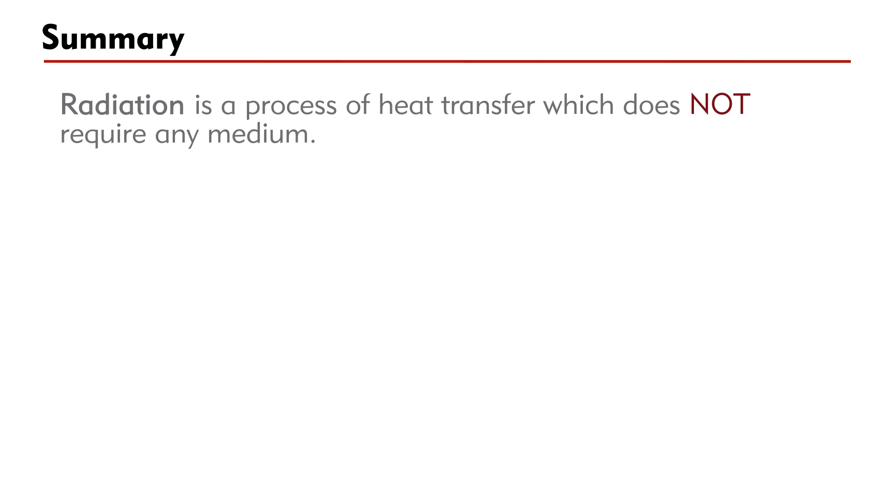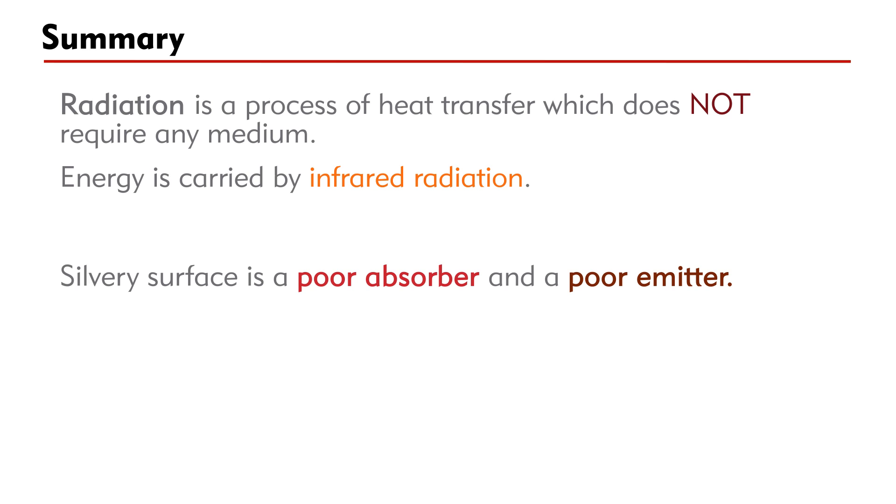Summary, radiation is a process of heat transfer which does not require any medium. Energy is carried by infrared radiation. Silver surface is a poor radiation absorber and a poor radiation emitter. Dull black surface is a good radiation absorber and a good radiation emitter. I hope this video can help you understand more about radiation. Thank you for watching.